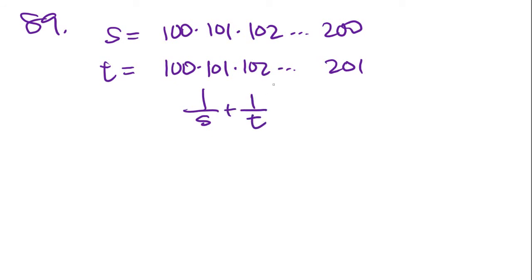Number 89 says, if s is the product of the integers from 100 to 200, so s equals basically 100 times 101 times 102, all the way to 200. And t is the product of integers from 100 to 201, all the way to 201. Then what is 1 over s minus 1 over t, in terms of t? First time I saw this question, I freaked out. I thought I'm going to have to multiply 100 by 101, by 102, all the way to 200. And I was trying to look for a shortcut, and I just couldn't find it.